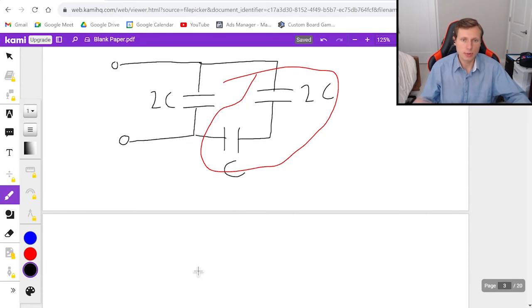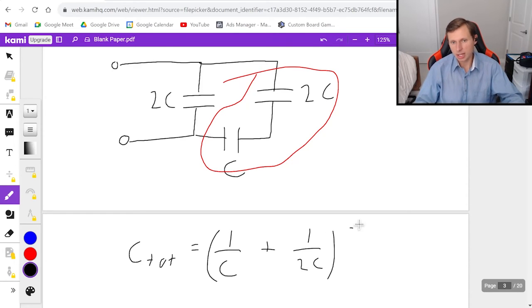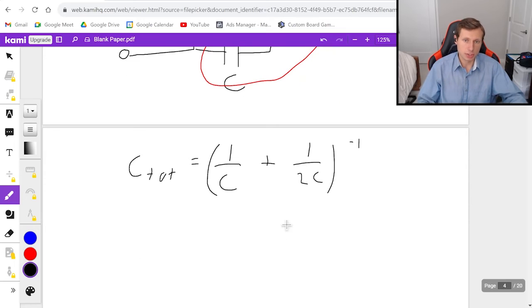And since they're in series we have to do the weird math where C total equals 1 over C plus 1 over 2C. And all of that is to the negative first power. If you want to solve this you're going to need a common denominator. That means I'm going to multiply this by 2 over 2. No problem.